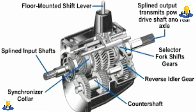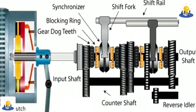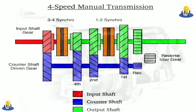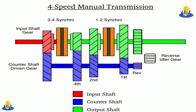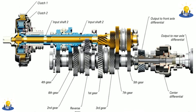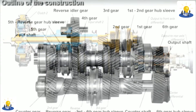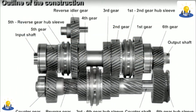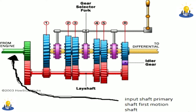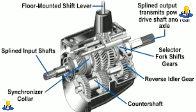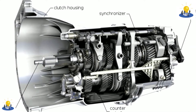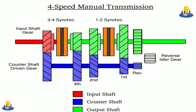A manual transmission has several shafts with various gears and other components attached to them. Most modern passenger cars use constant mesh transmissions consisting of three shafts: an input shaft, a countershaft — also called a lay shaft — and an output shaft. The input shaft is connected to the engine and spins at engine speed whenever the clutch is engaged. The countershaft has gears of various sizes which are permanently meshed with the corresponding gear on the input shaft. The gears on the output shaft are also permanently meshed with the corresponding gear on the countershaft; however, the output shaft gears are able to rotate independently of the output shaft itself through the use of bearings located between the gears and the shaft.